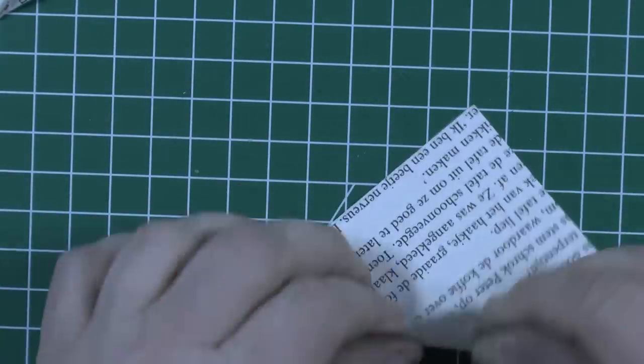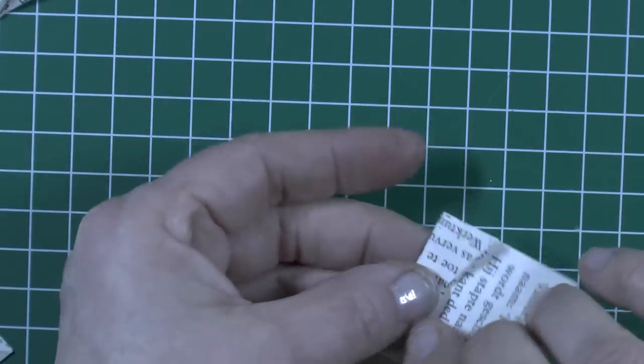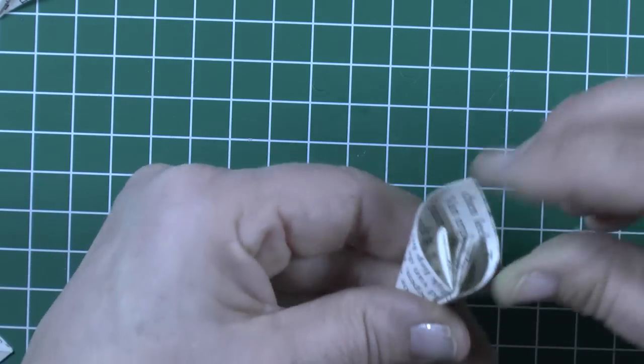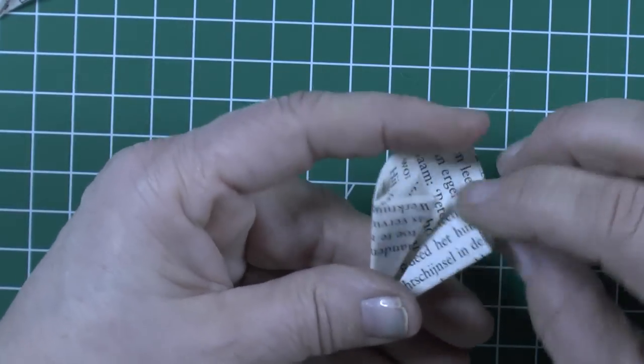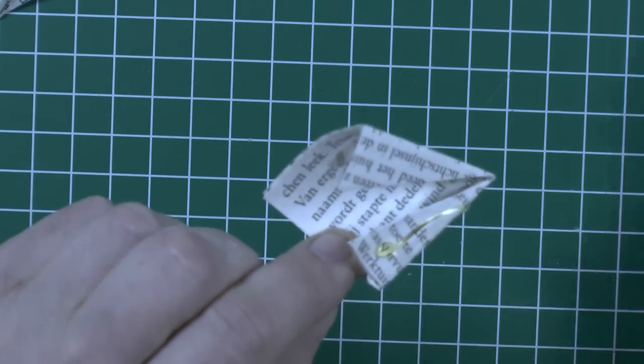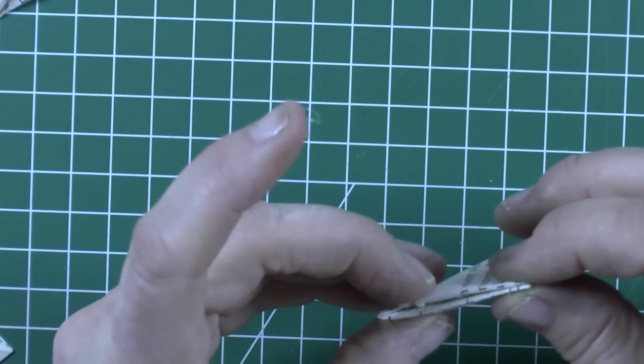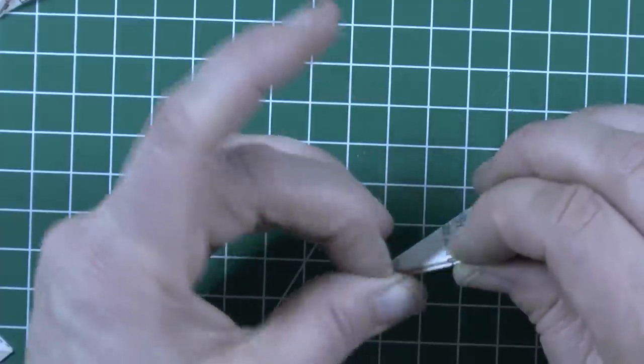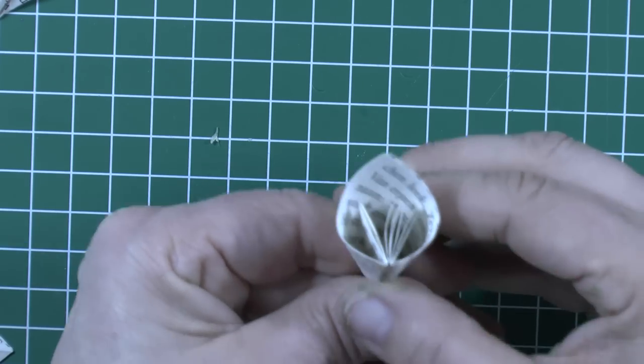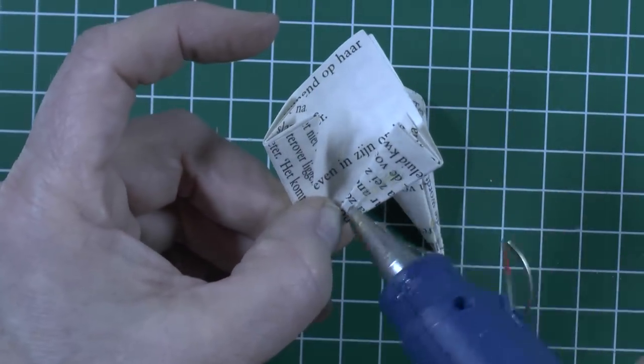I'm going to fold petal number two. Just bend it towards another. So you have this. I will put some glue between. Squeeze a bit. And that's petal number two. So I will use some glue to...